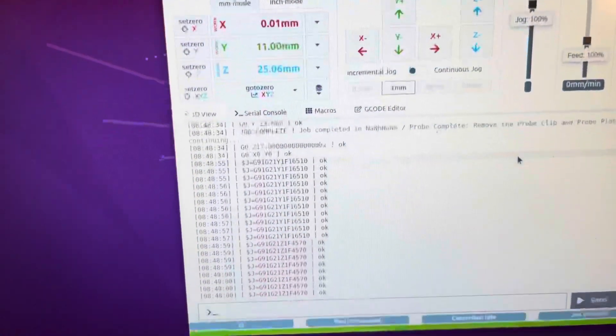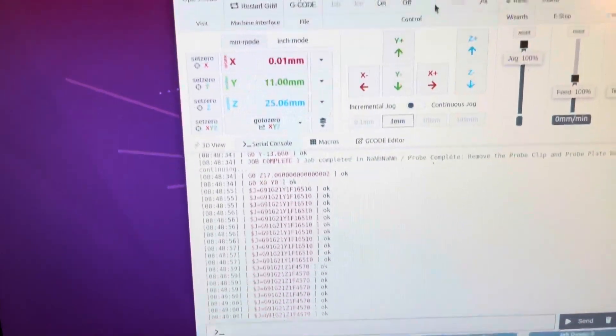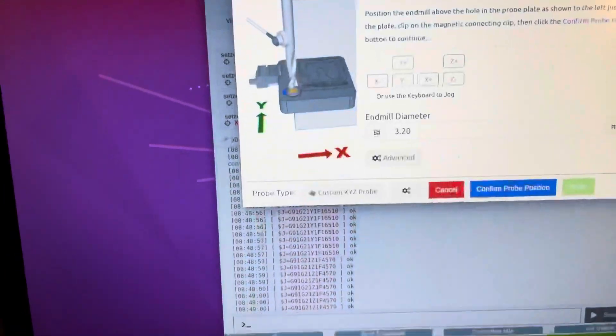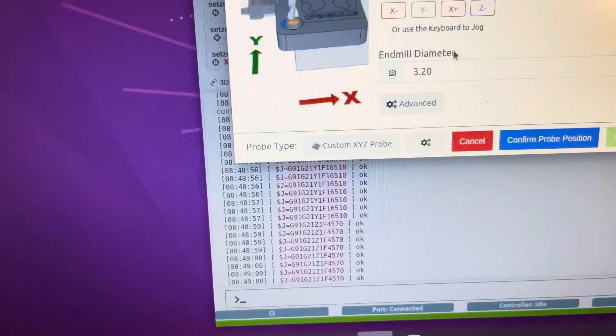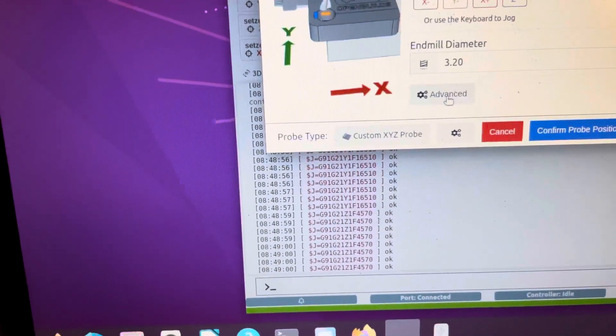I had to change the size and settings. When you go under Probe, I've got 3.20 for the bit, and I'm going to go here to Advanced.